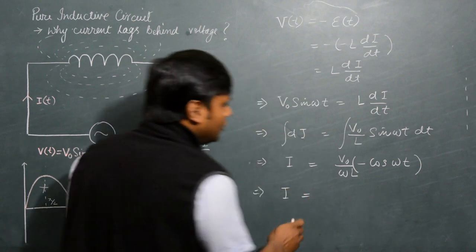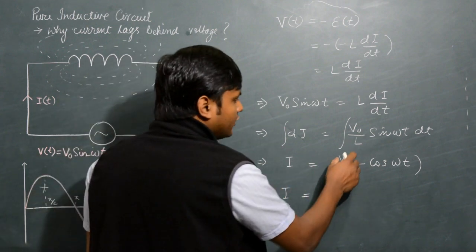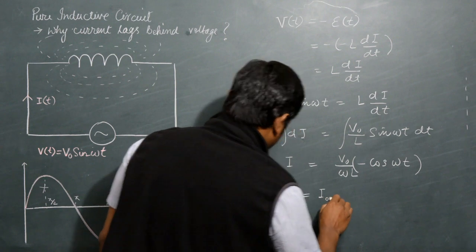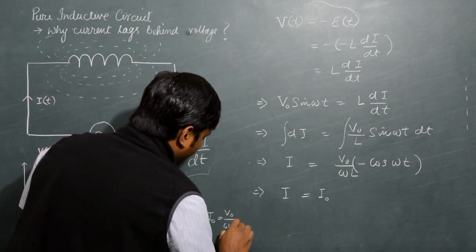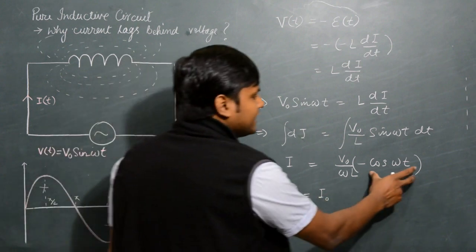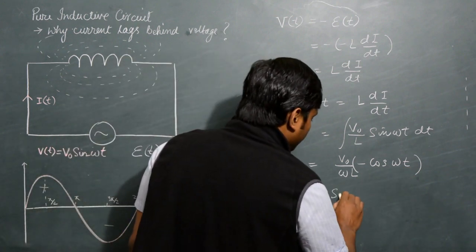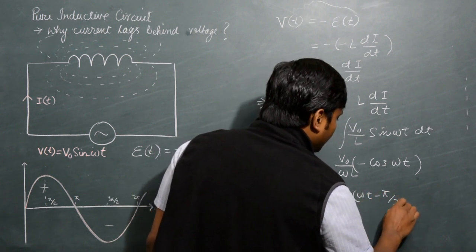Or I equals V₀/(ωL) as some kind of constant, because V₀ is the maximum voltage. So let's write this as I₀. I₀ is nothing but V₀/(ωL), and minus cos(ωt) can simply be converted to a sin function if I write sin(ωt - π/2).